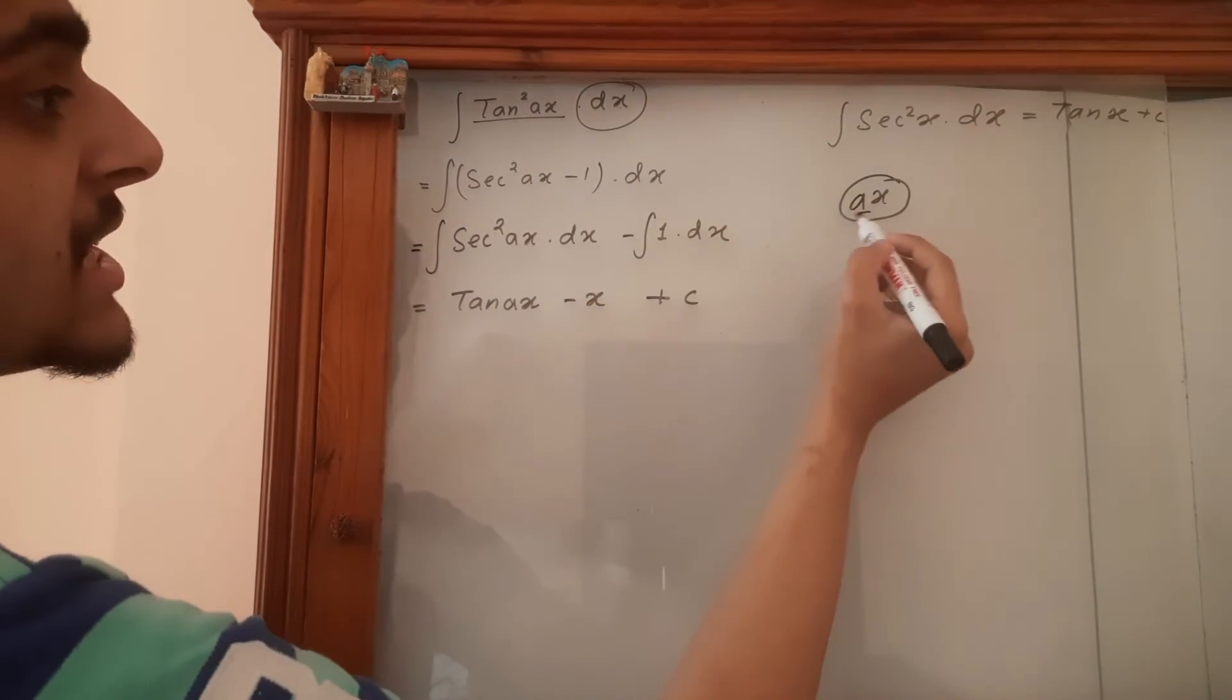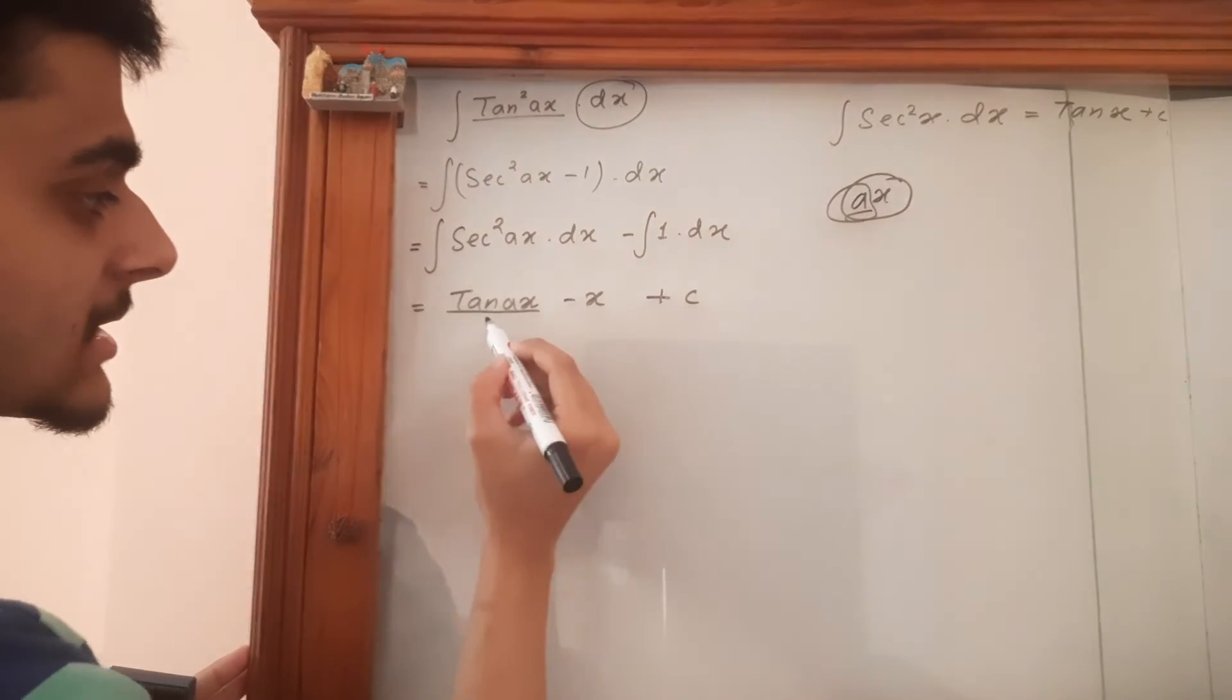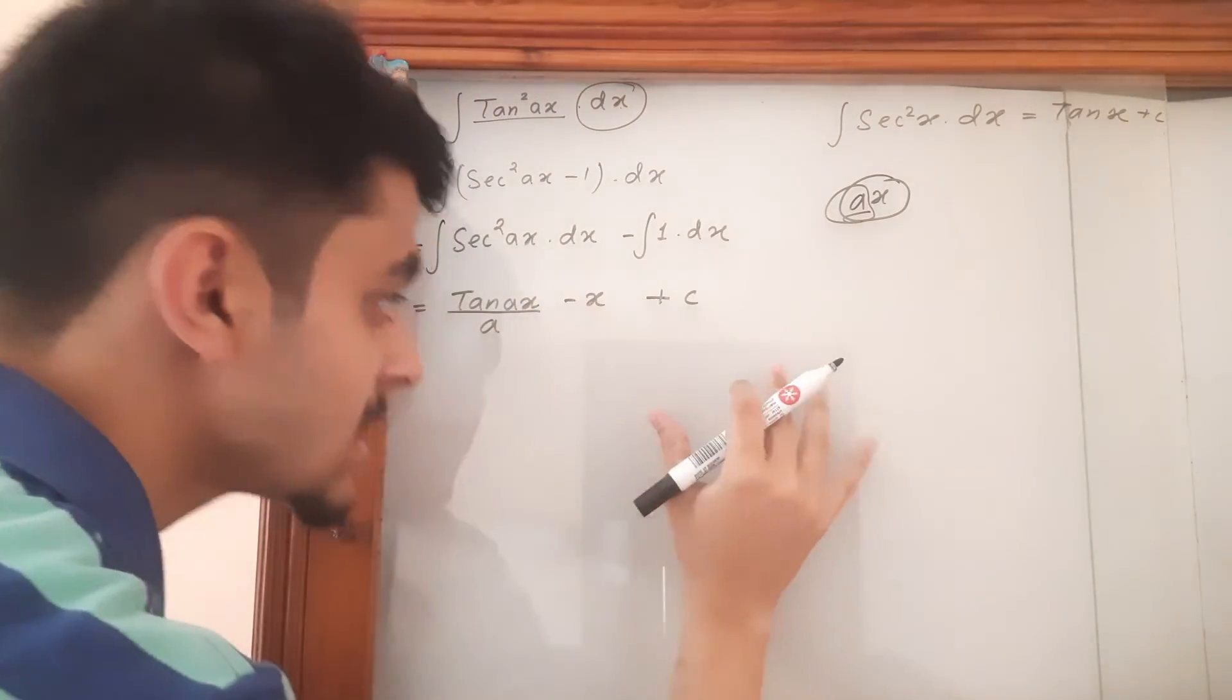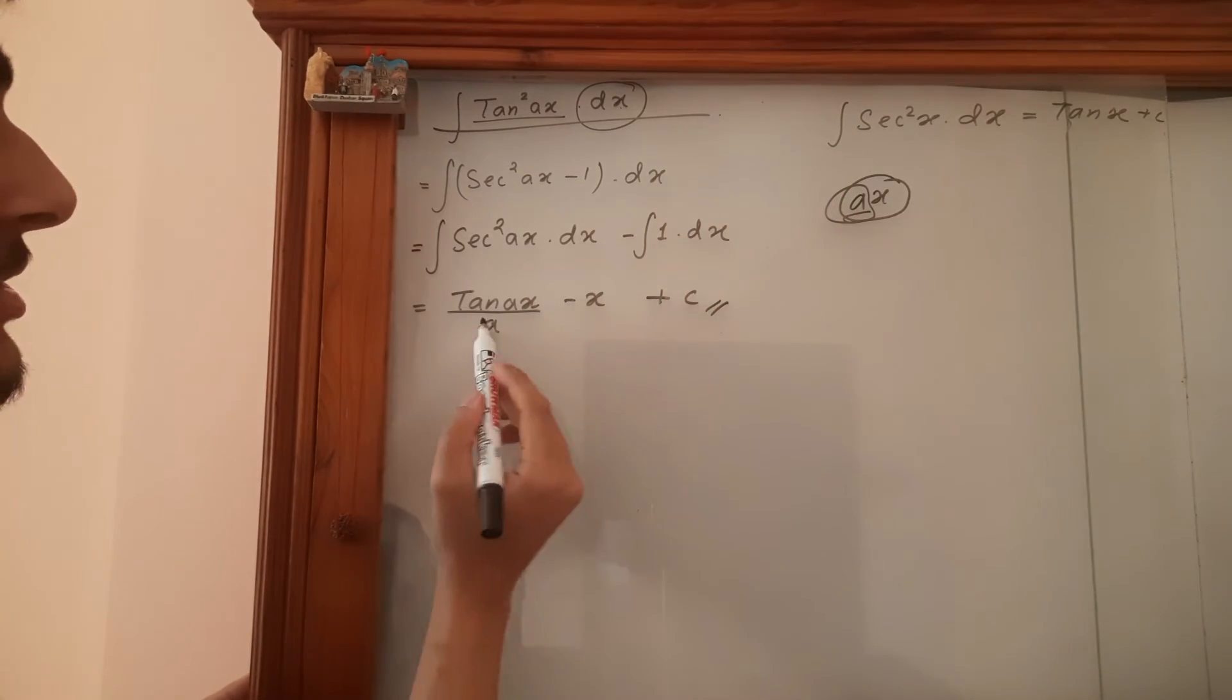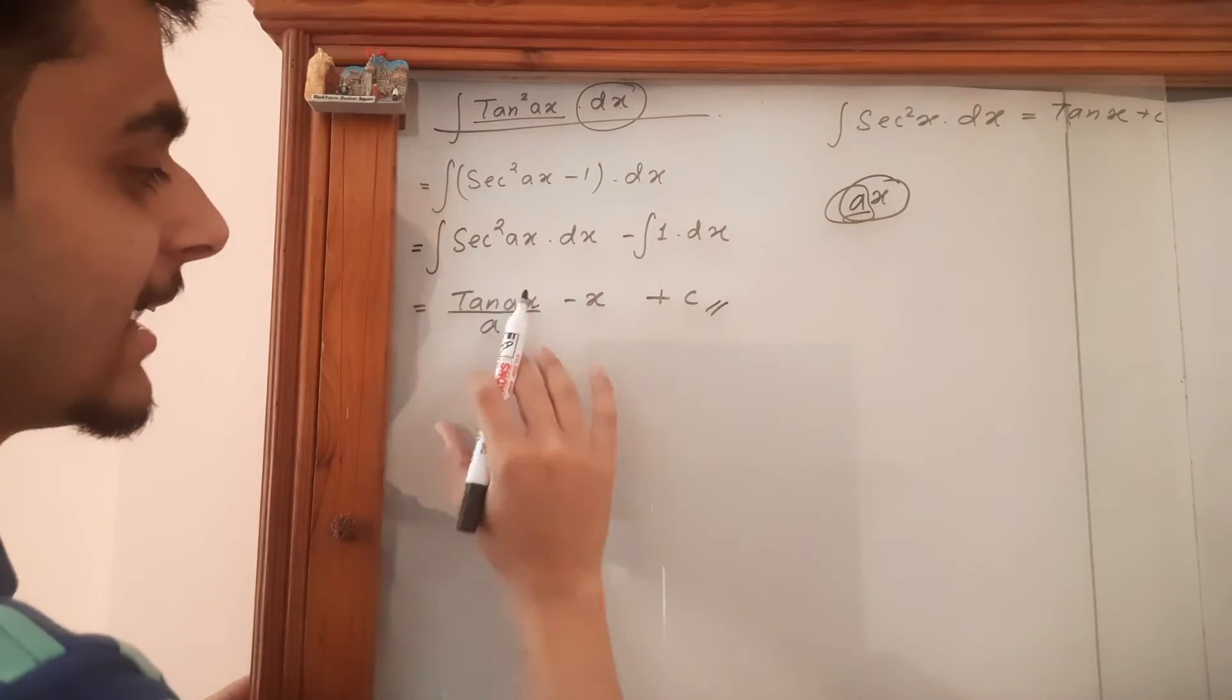So this a will be dividing this and yes, now this is the final answer to this question. So don't forget to divide this tan ax by a.